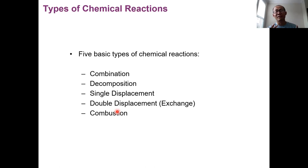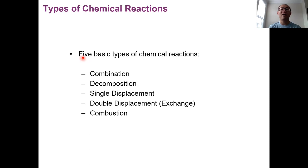We have two ways of classifying chemical reactions, talking about the types. One type is called the five basic types, either based on the fashion of the reaction or based on the chemical equations. You can recognize these five types based on chemical equations. They're called five basic types, and these include combination reaction, decomposition reaction, single displacement, double displacement, or combustion reaction.